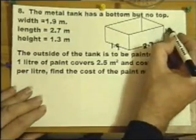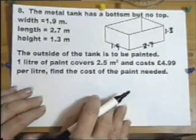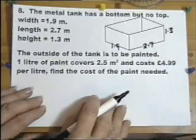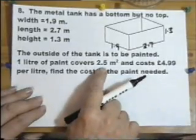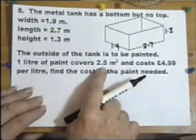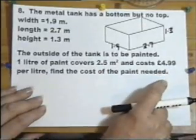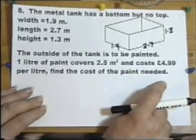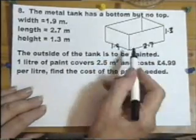The outside of the tank is to be painted with rust prevention paint. One liter of paint will cover 2.5 square meters and the cost of that liter is £4.99 per liter. Find the cost of the paint needed.